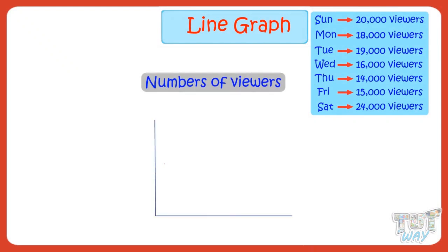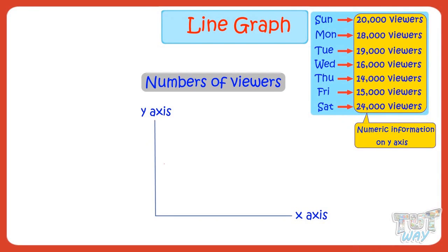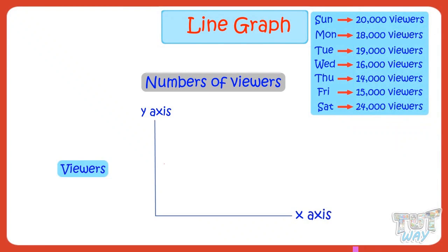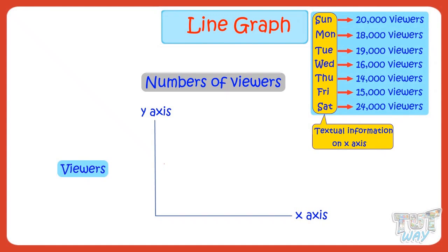A graph always has two axes, and we depict two types of information on two different axes of the graph. Here, the two types of info we have are names of days, which is textual information, and number of viewers of the movie, which is our numeric information. Let y-axis be for showing the number of viewers, so mark it 'viewers'. And let x-axis be showing names of the days, so mark it 'days'.